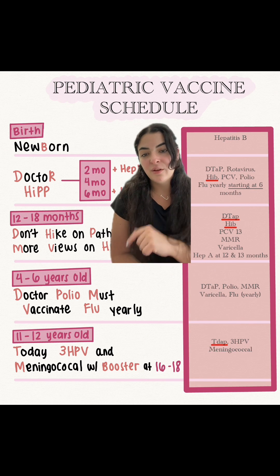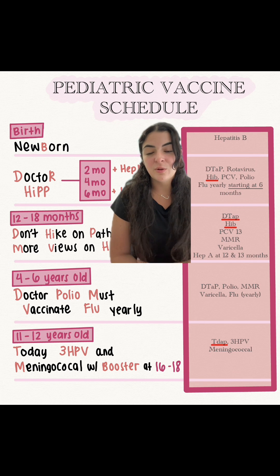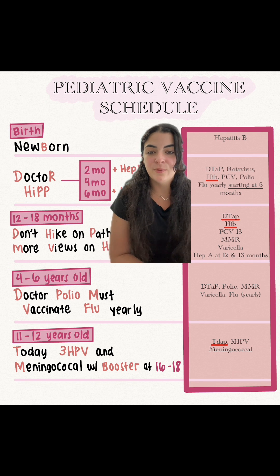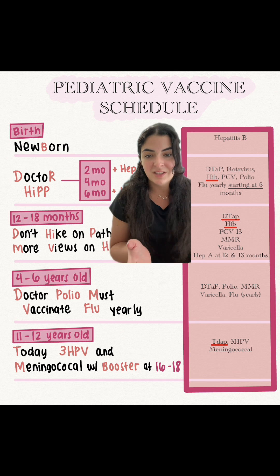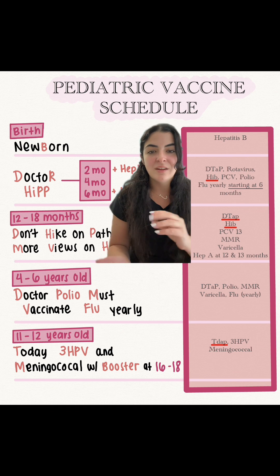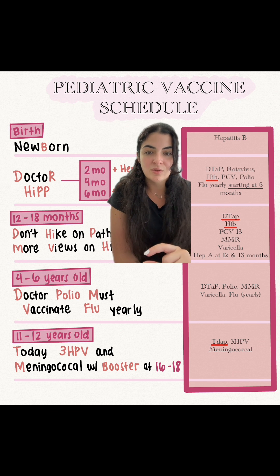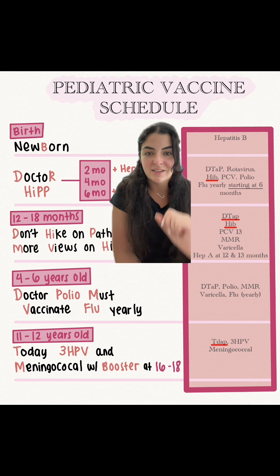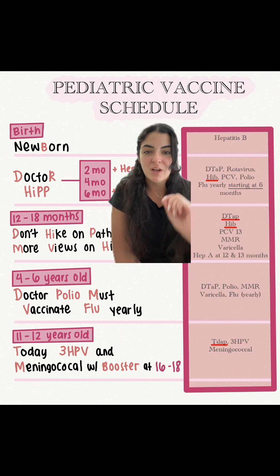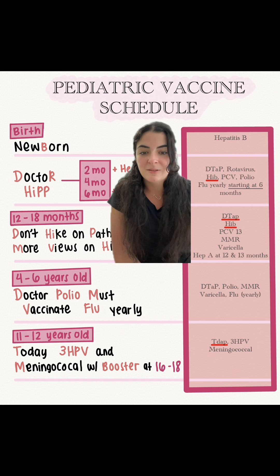Now let's check out our 4 to 6 year old children. At that age: DTaP, polio, MMR, varicella, and flu yearly. We give MMR and varicella both at 12 to 18 months and 4 to 6 years old. Remember that these are live vaccines — that's also an important tip for NCLEX.